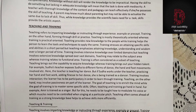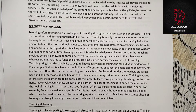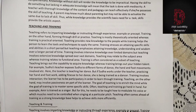For example, Shraddha's teacher exposes Shraddha to different forms of dance — the hand and foot movements, expressions, etc. Here the teacher is teaching her dance. But if Shraddha works under the teacher, practicing her hand and foot work and adding finesse to her dance, she is being trained as a dancer. Training involves active interaction — the learner has to be participatory in order to learn through training. Teaching, on the other hand, may involve passiveness on the part of the learner. The goal of teaching is to enrich the mind, while the goal of training is to master some specific skills.